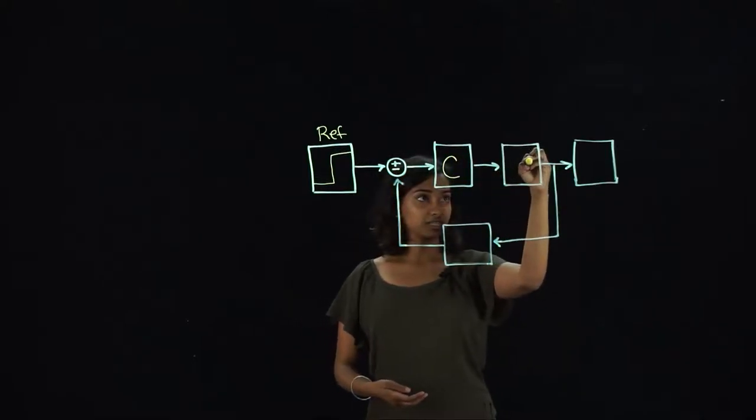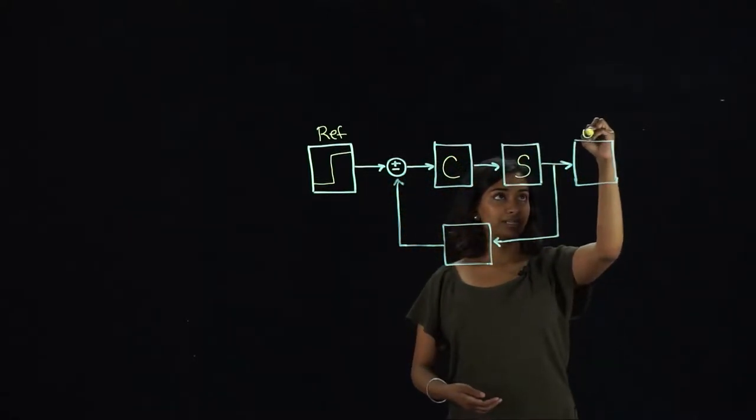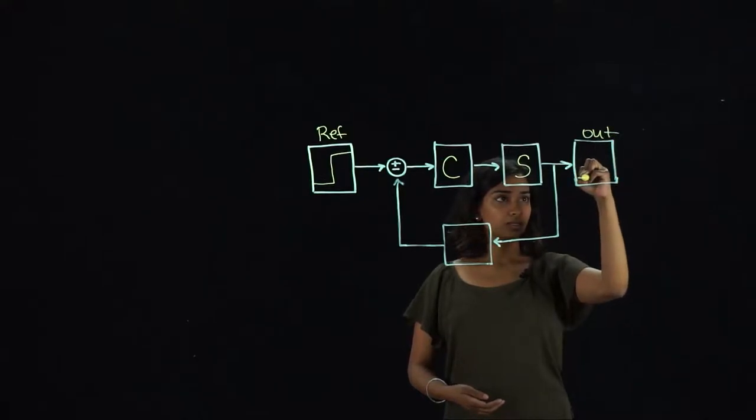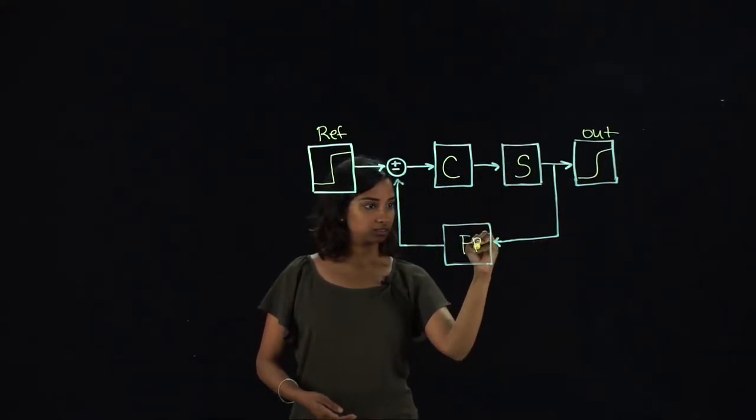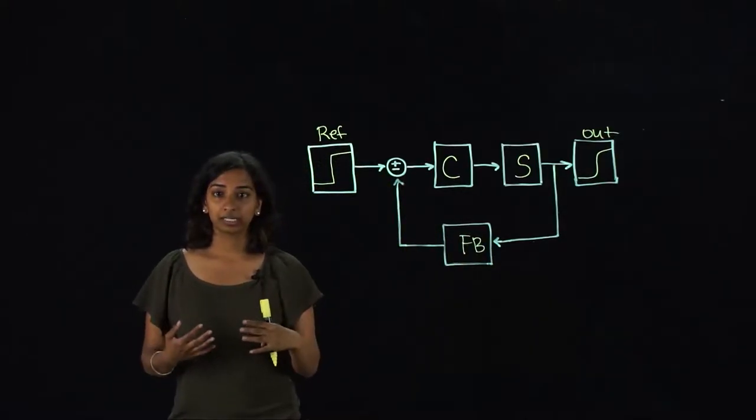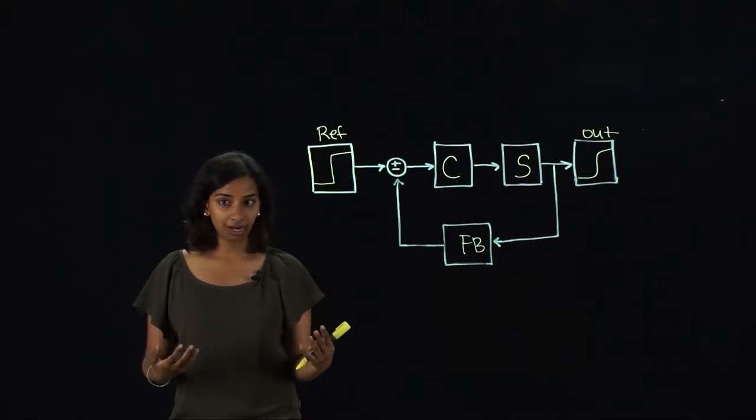Given this reference, the controller tells the system how to create the output by comparing the feedback to the reference. This could be the building automatically increasing the power of the air conditioner when it is extra hot outside.